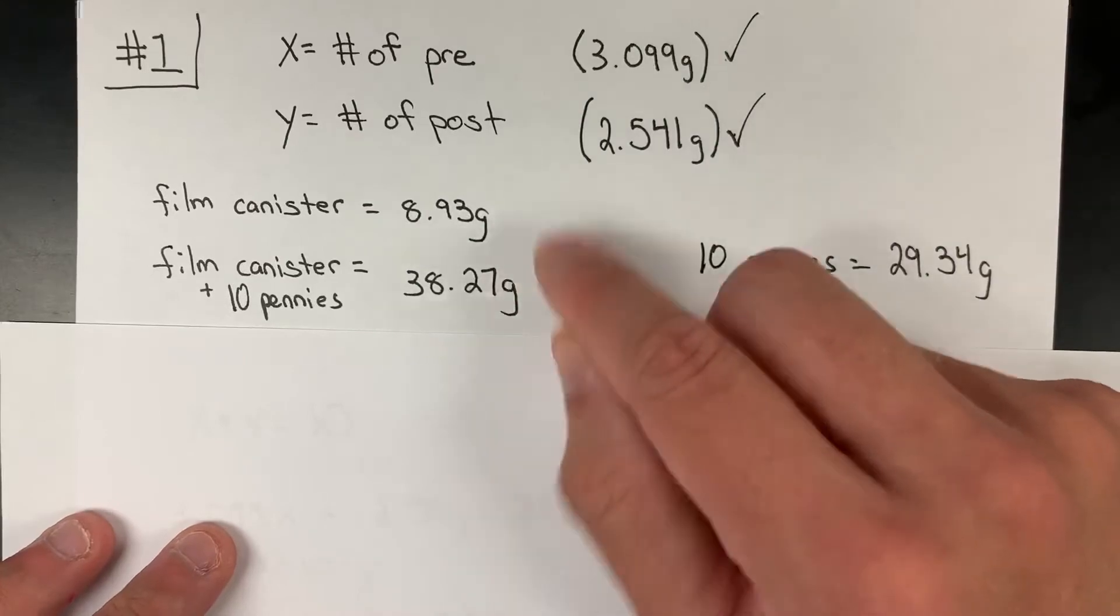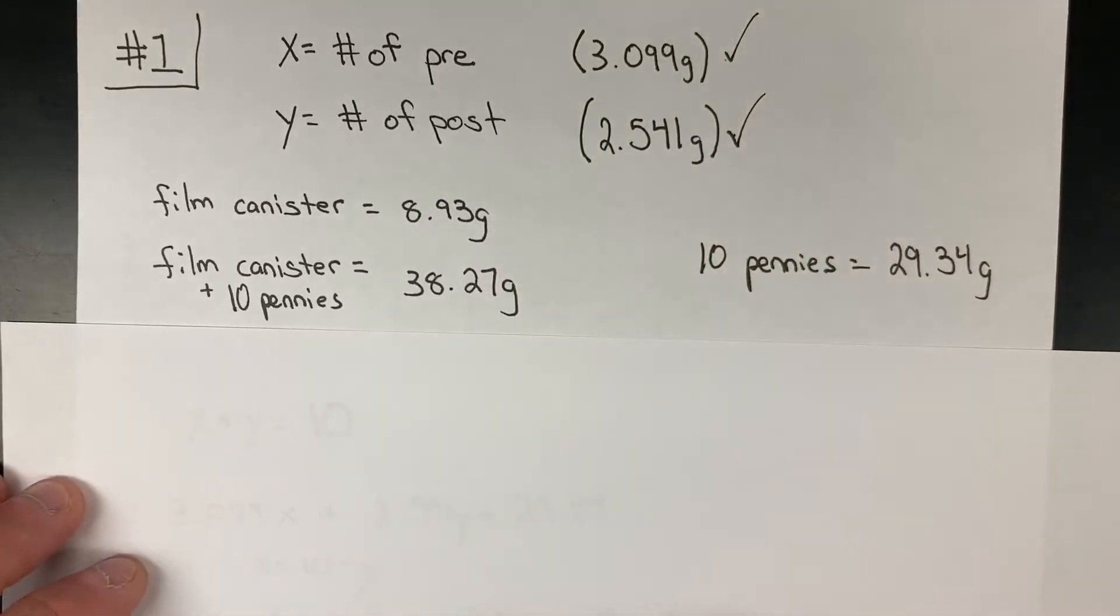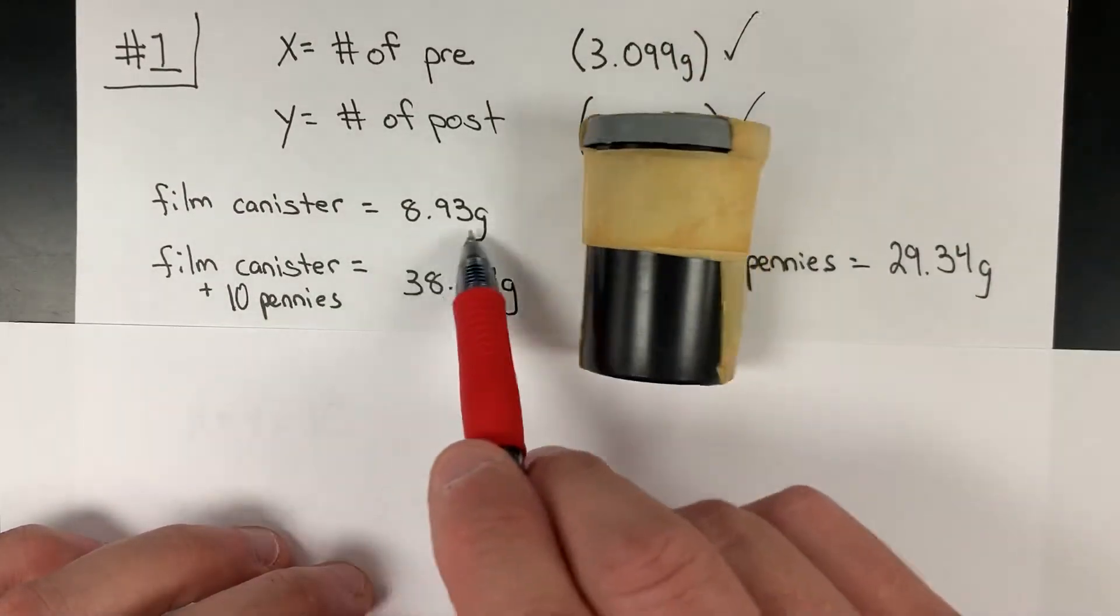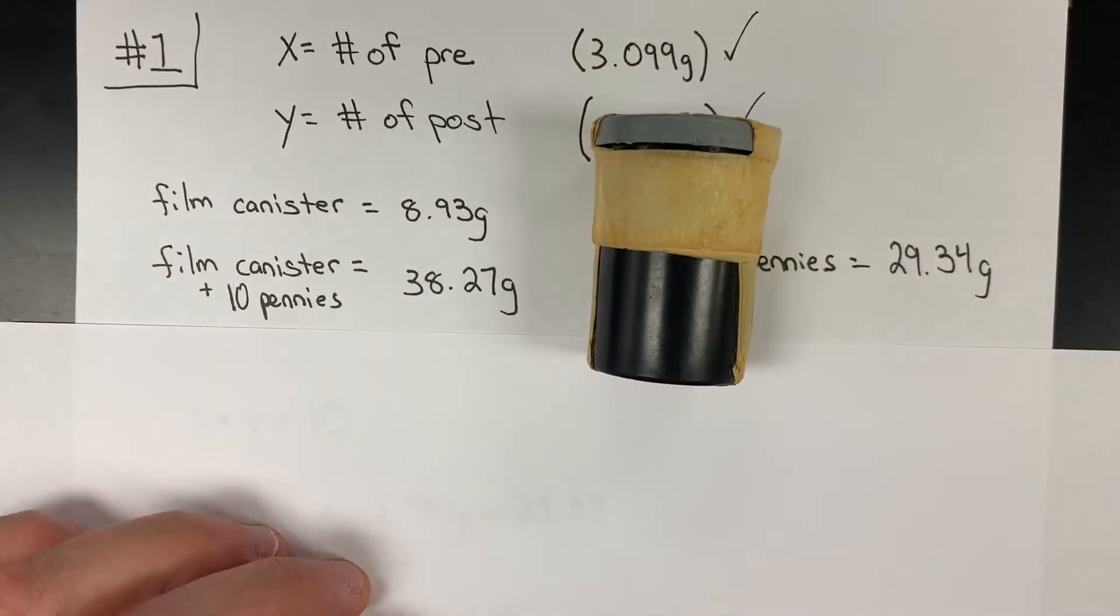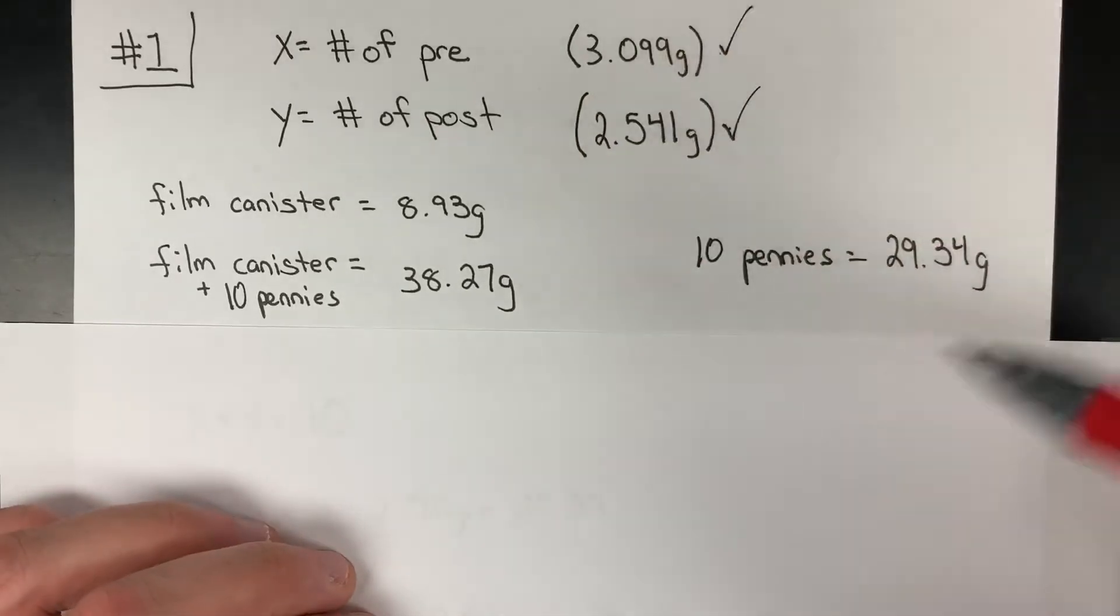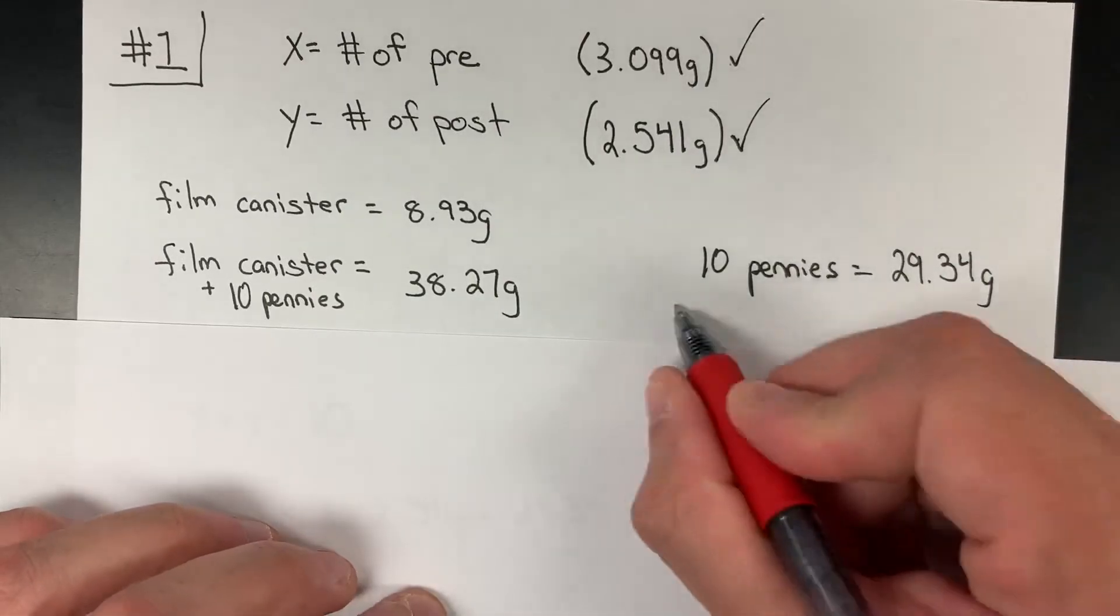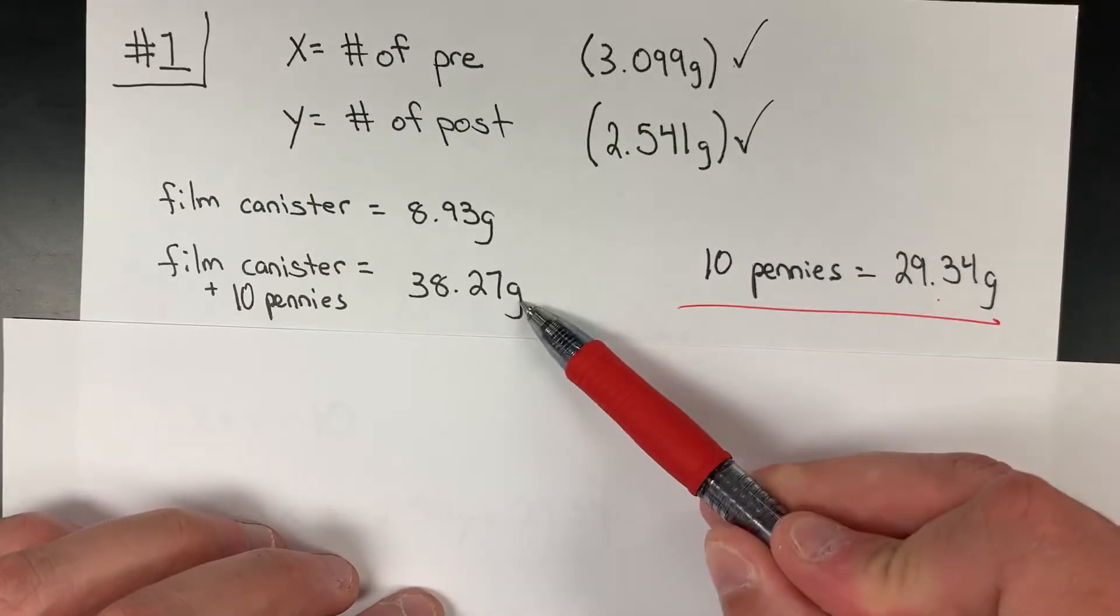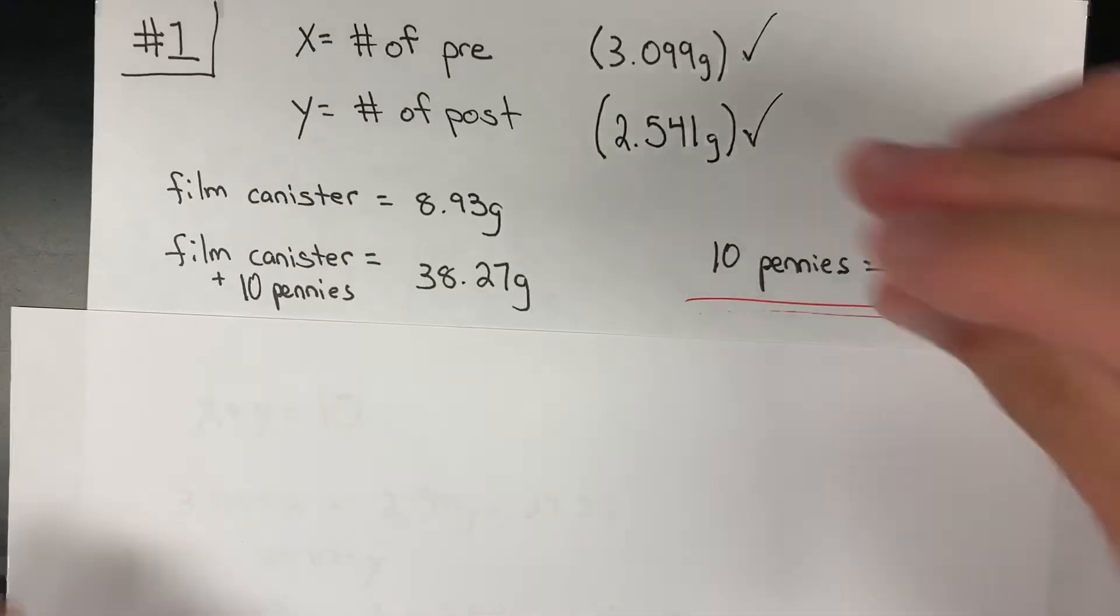This is not the data you were working with in class today, but imagine that this film canister had a mass of 8.93 grams, and then I stuck 10 pennies inside of it, and the mass was 38.27 grams. By simple subtraction, the difference tells me that the 10 pennies I've added have a mass of 29.34 grams. So mass of container, mass of container plus pennies—the difference is merely those 10 pennies.